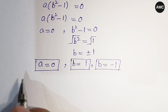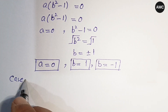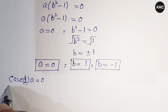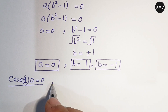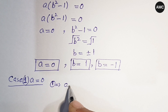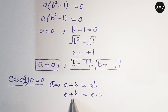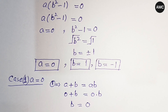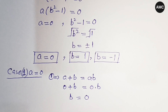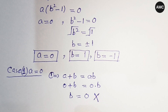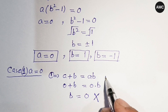Case one: a equals zero. Substituting into equation one — a plus b equals ab — gives zero plus b equals zero times b, so b equals zero. But b cannot equal zero as stated in our problem, so this case is rejected.